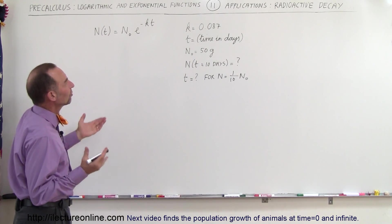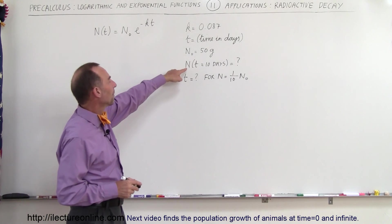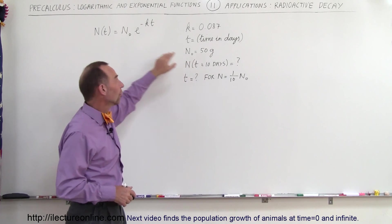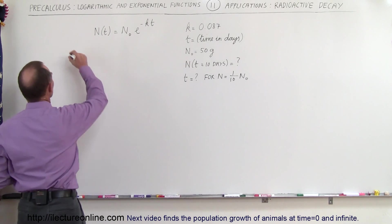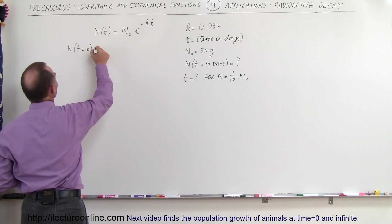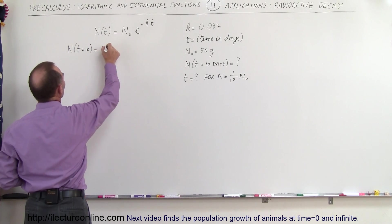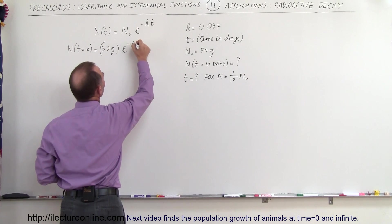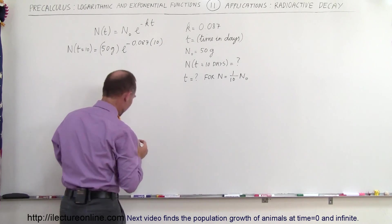So the first thing we're going to do is simply figure out how much of the amount that we started with we will have left over after a period of 10 days using this equation. So here we say n when t is equal to 10 is equal to the initial amount which is 50 grams times e to the minus k is 0.087 and the time would be 10 days.